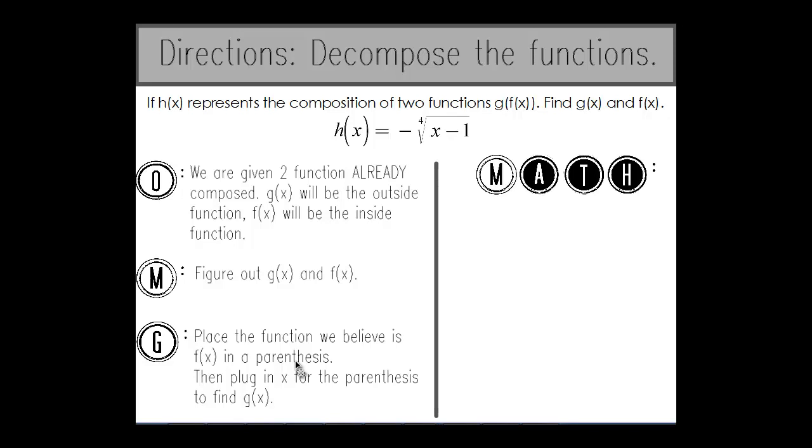Let me show you what I mean by that and how that works. So when we take this function, negative radical 4, x minus 1, I believe that x minus 1 is f of x.